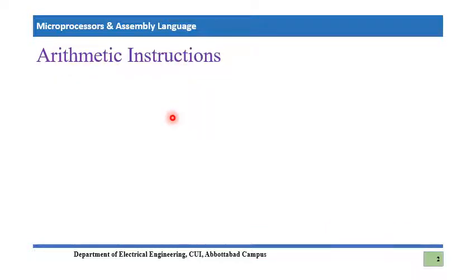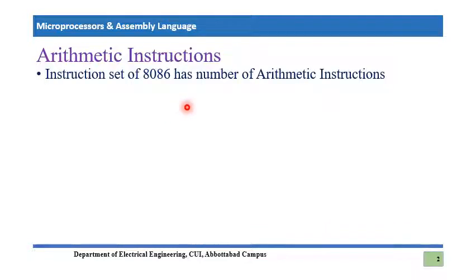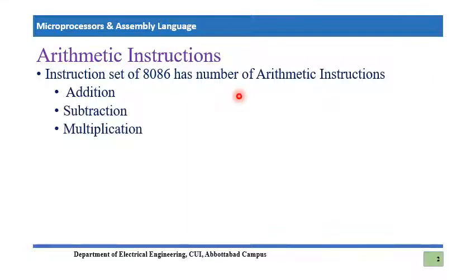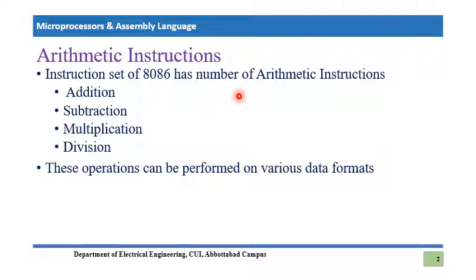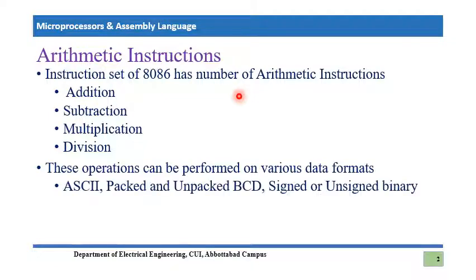The instruction set of 8086 has a number of arithmetic instructions which involve operations like addition, subtraction, multiplication, and division. These operations can be performed on various data formats such as ASCII, packed or unpacked BCD numbers, or signed and unsigned binary numbers.